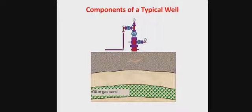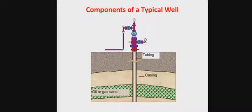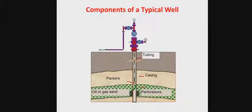These are the components of a typical well. You can see you have the reservoir, which contains oil or gas — it may also contain only oil. This is the casing, and then you have the tubing inside the casing. This is the well head or Christmas tree. These are the packers, which are always placed in between the tubing and the casing. Then the perforations. You can see the natural flow from the reservoir to the casing, through the tubing, goes to the well head and to the flow line.